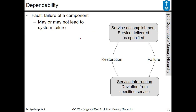The dependability has a relation with failure. The fault is a failure of a component that may or may not lead to the system failure. If you ensure that no failure could happen, then the system becomes 100% dependable, but this is very difficult to achieve, and your target is actually to reduce the failure rate as much as possible.